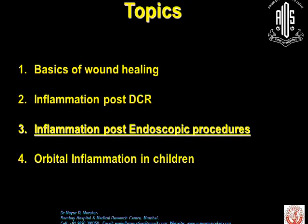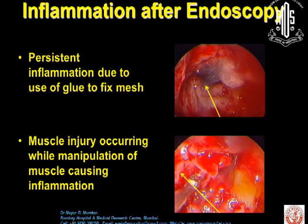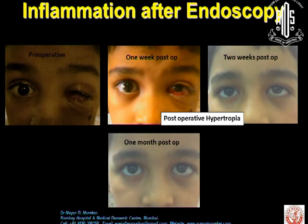Coming to inflammation post-endoscopic procedures: inflammation after endoscopic surgery is related to persistent inflammation due to use of a tube to fix the mesh, and muscle injury occurring while manipulation of the muscle causes inflammation. These are pictures showing post-operative oedema in the first two weeks of the procedure, which is corrected by one month post-op.